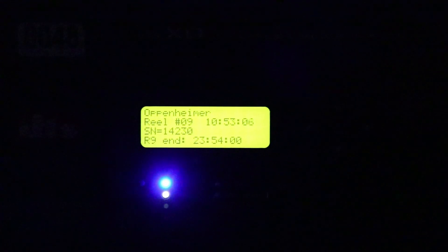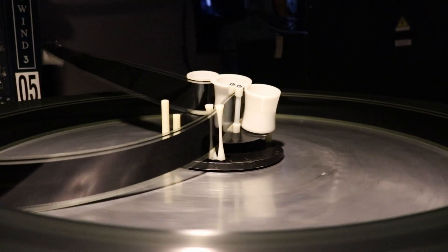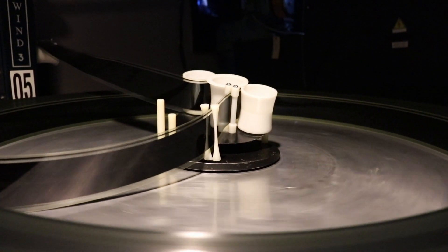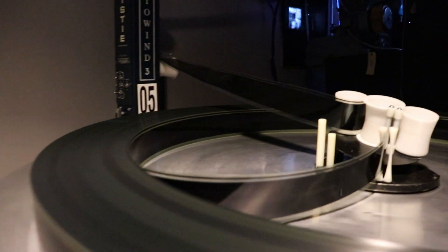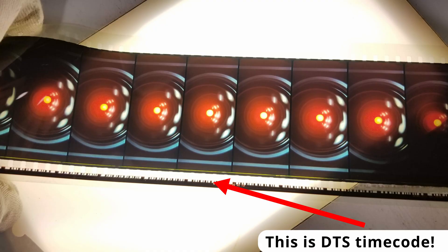Today, we have digital sound on 70mm using the DTS system. DTS is quite a simple system, conceptually, and it's actually a bit of a throwback to how we first did sound on film, with an external disc. On the film itself, there is a timecode which specifies the movie, the reel number, and the exact frame being played.